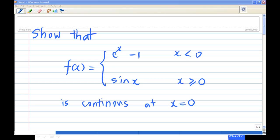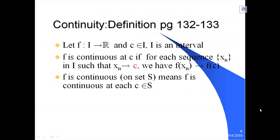To do this, you need to recall the definition of a function continuous at a point. Referring to David Brennan's text, page 132–133: if f is a function from an interval I to the real numbers and c is a point in the interval, we say f is continuous at point c if for each sequence x_n in I such that x_n converges to c, we have f(x_n) converges to f(c).